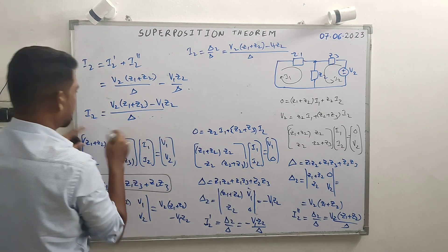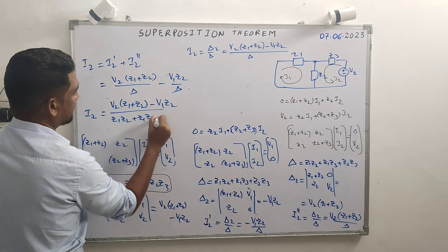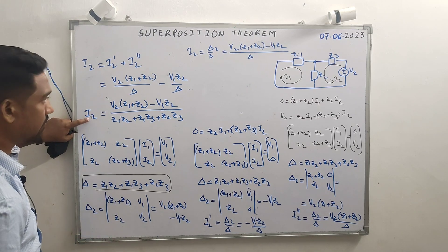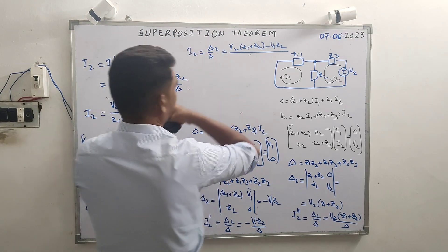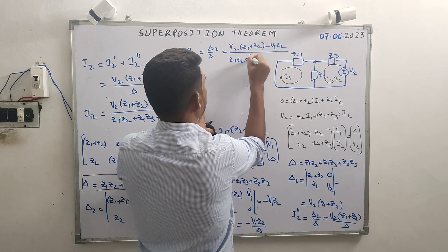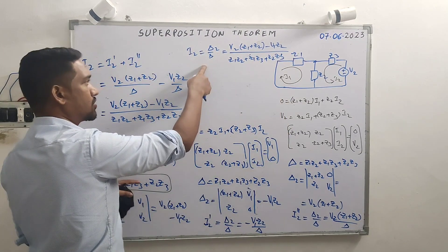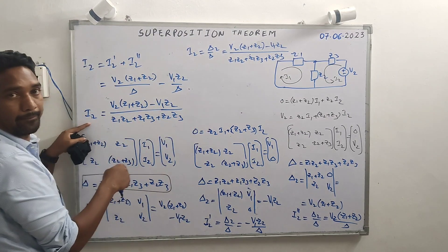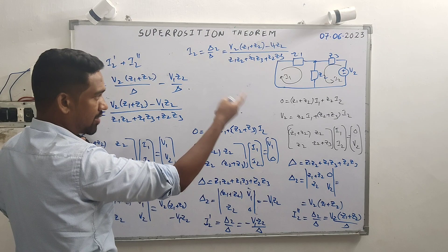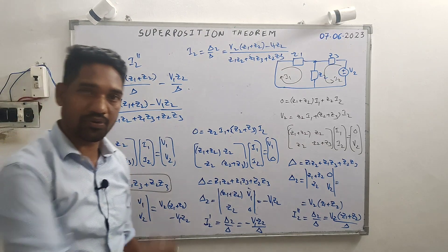Delta is Z1·Z2 plus Z1·Z3 plus Z2·Z3. The i2 computed with both sources together, and the i2 obtained by superposition of individual source responses — both give the same result. This confirms the proof of the superposition theorem.